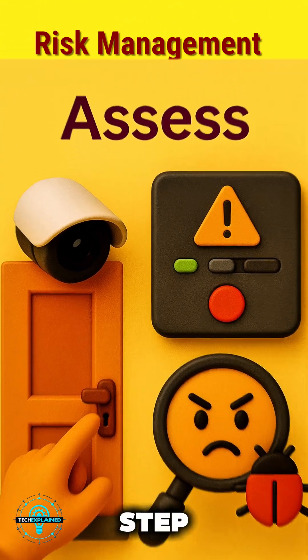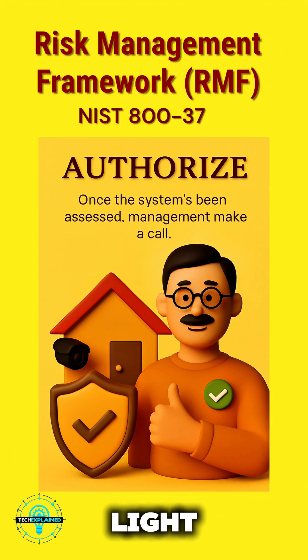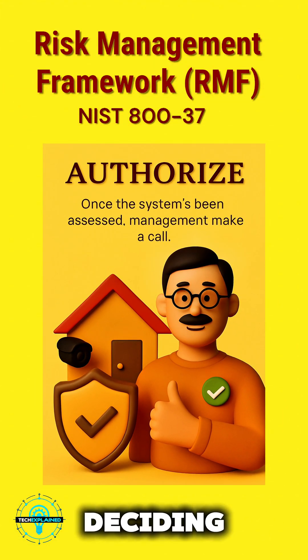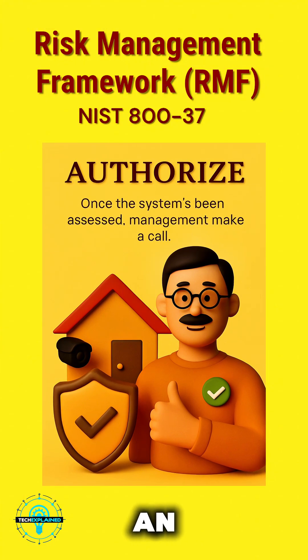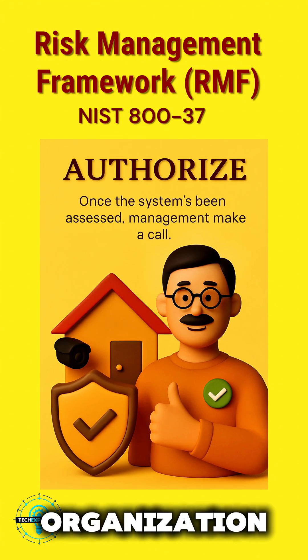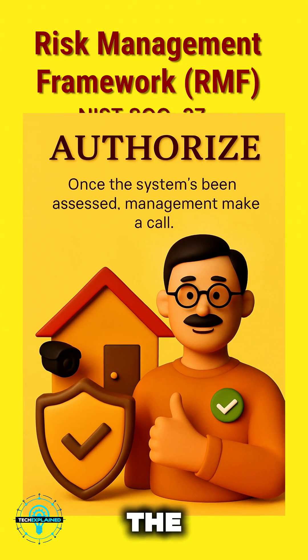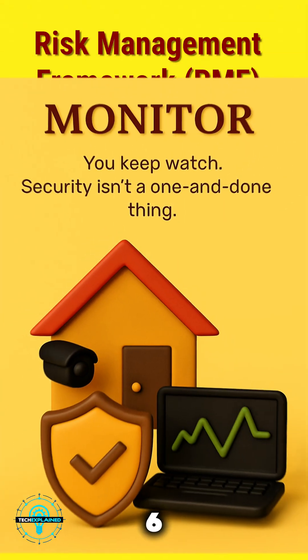Step five: Authorize. Someone needs to give the green light. In your house, that's you deciding, okay, I feel secure living here now. In an organization, management accepts the risk and approves the system for use.